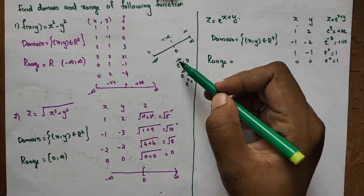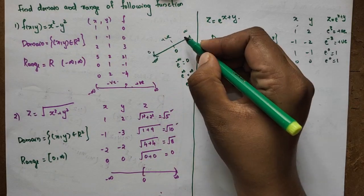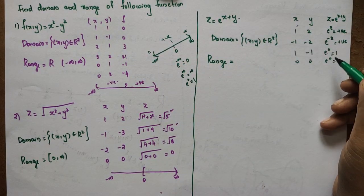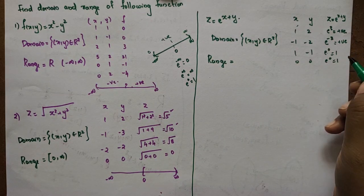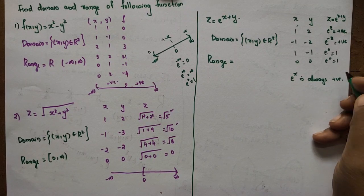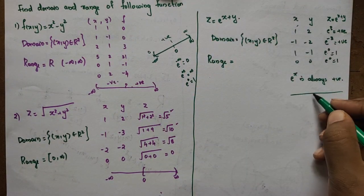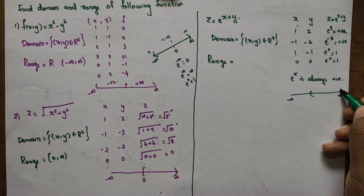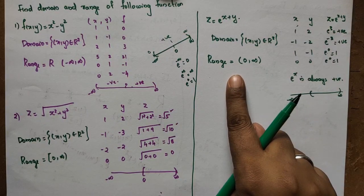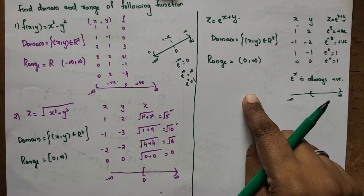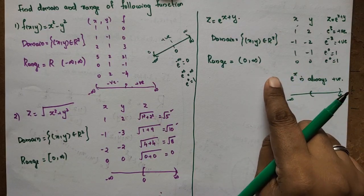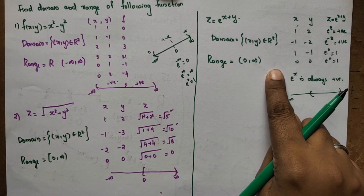The exponential can approach 0 (as x+y → -∞) but never equals 0, and it goes up to infinity. Since the value is always positive and never reaches 0, we use an open bracket. The range is (0, ∞) — open interval, excluding 0.